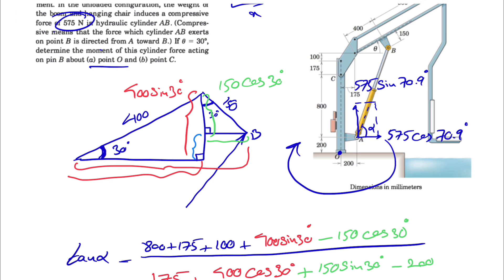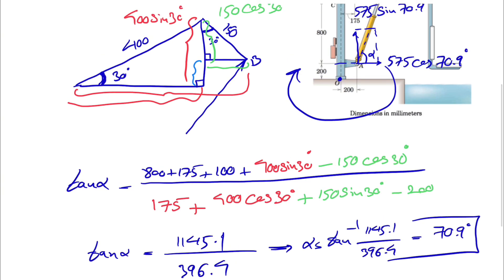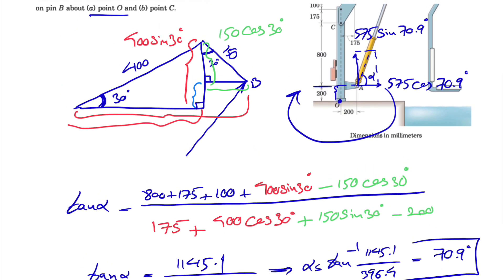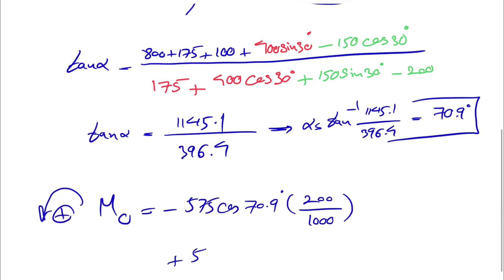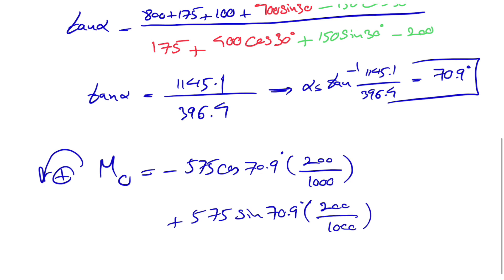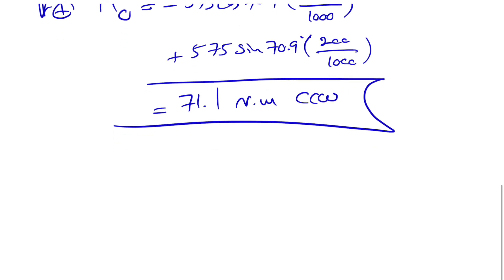The x component (cosine) creates a clockwise moment about O, so it gets a negative sign: negative 575 cosine of 70.9 degrees times the distance of 200 mm, divided by 1000 to convert to meters. The y component creates a counterclockwise moment, so it's positive: plus 575 sine of 70.9 degrees times 200 divided by 1000. Calculating this gives 71.1 Newton-meters — no negative sign, so the moment is counterclockwise.